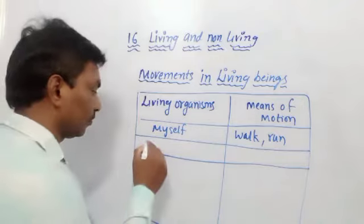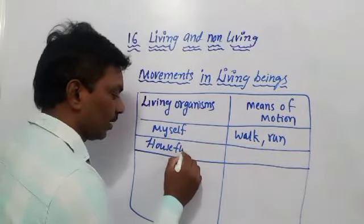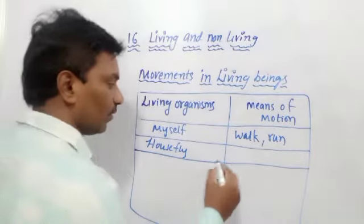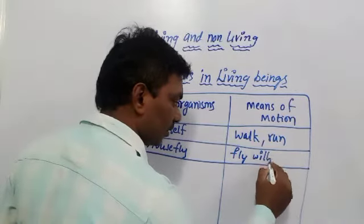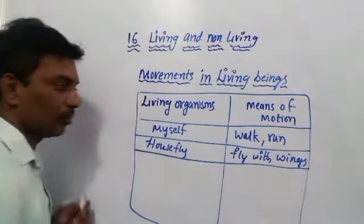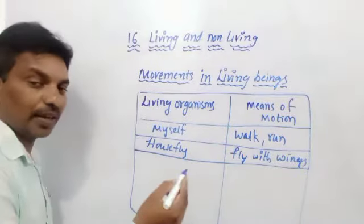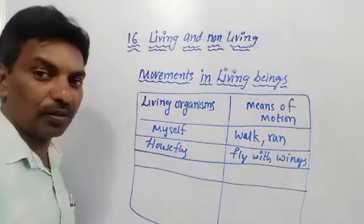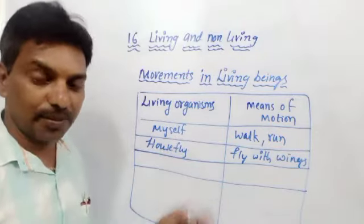The second organism is house fly. You know that. They can fly with their wings — fly with wings. We run and walk with our legs, but the house fly can fly. So that is the means of motion for the house fly: it flies.